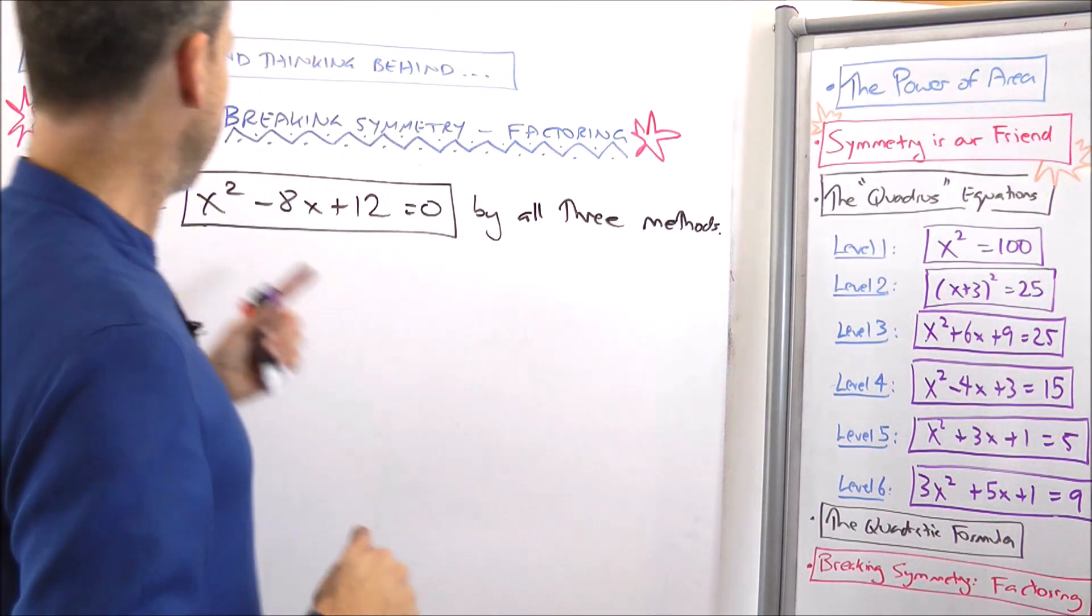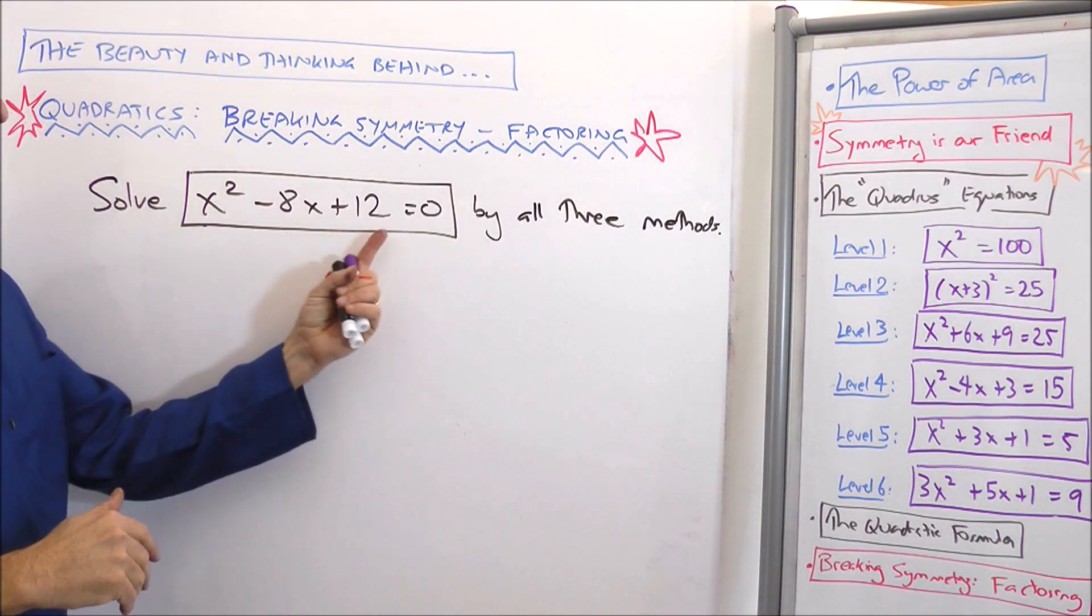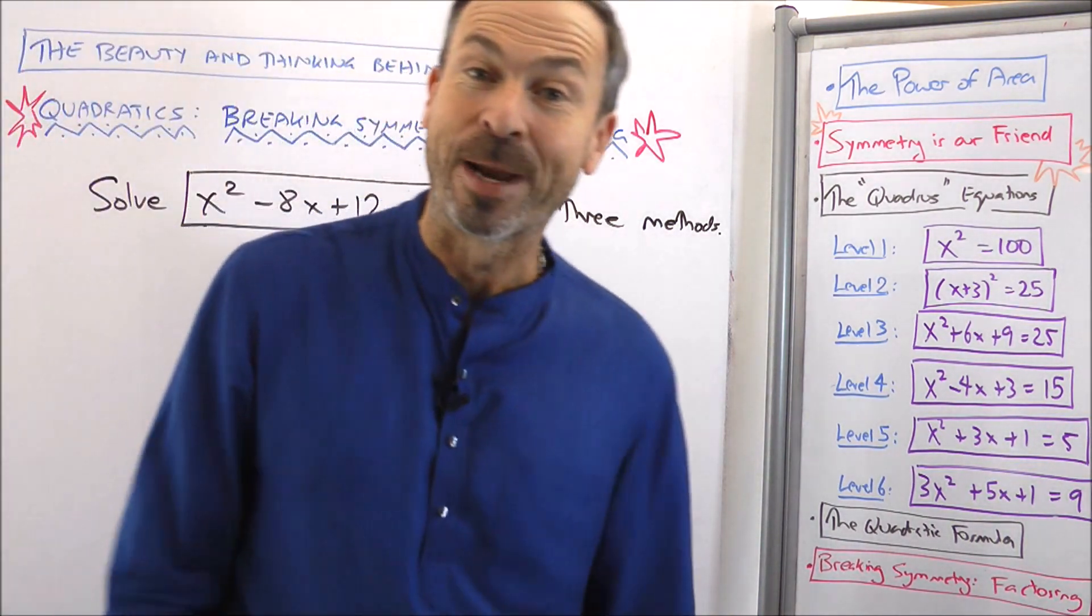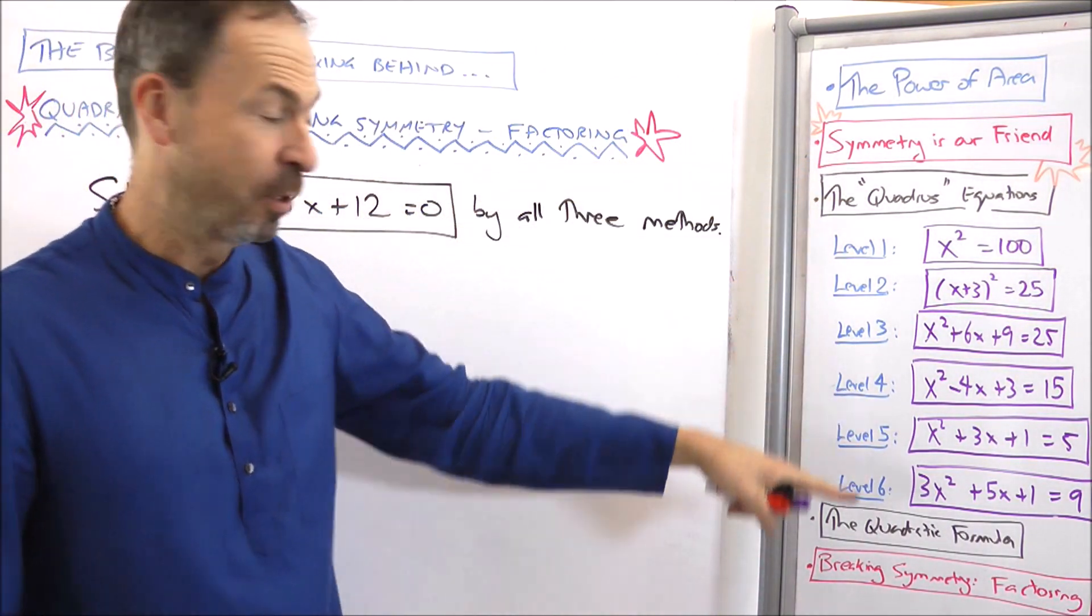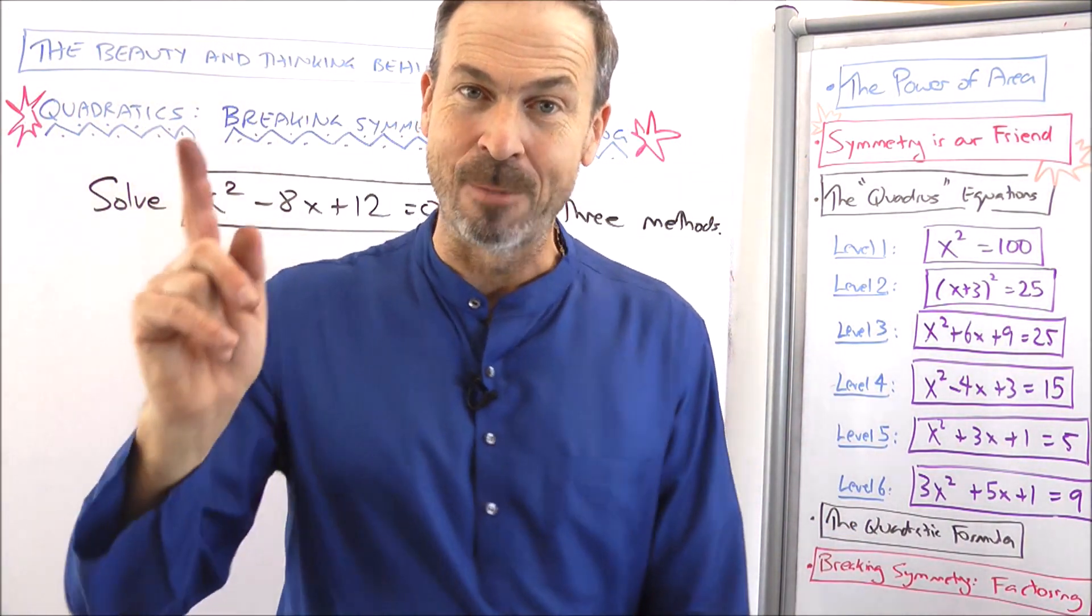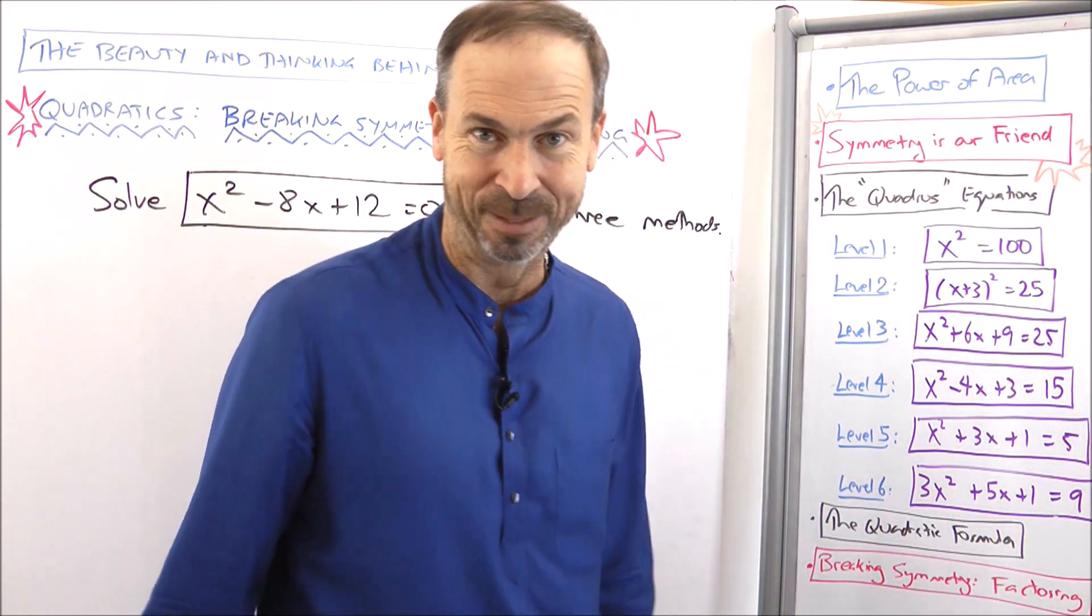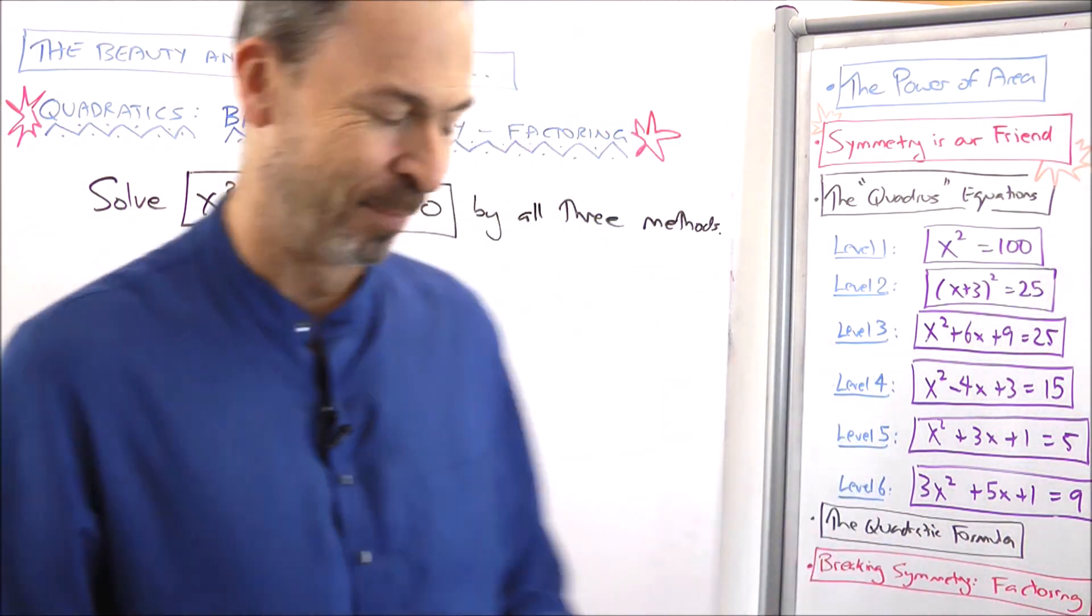Okay, let's do this practice problem together. Let's solve x squared minus 8x plus 12 equals zero by three different methods. We'll use the symmetrical quadratics method. We'll use the quadratic equation and then we'll try being unsymmetrical by doing factoring.